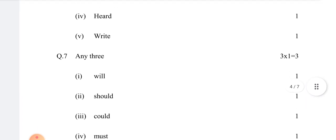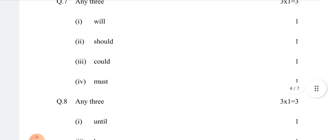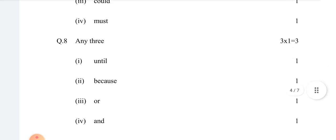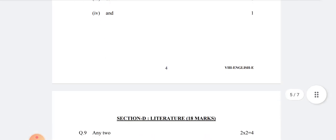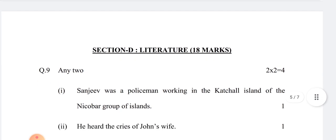Question number 7: one may have three children, for your kids, for your children. Question number 8: one may have three children for your children in large numbers. Section D is literature, 18 marks.